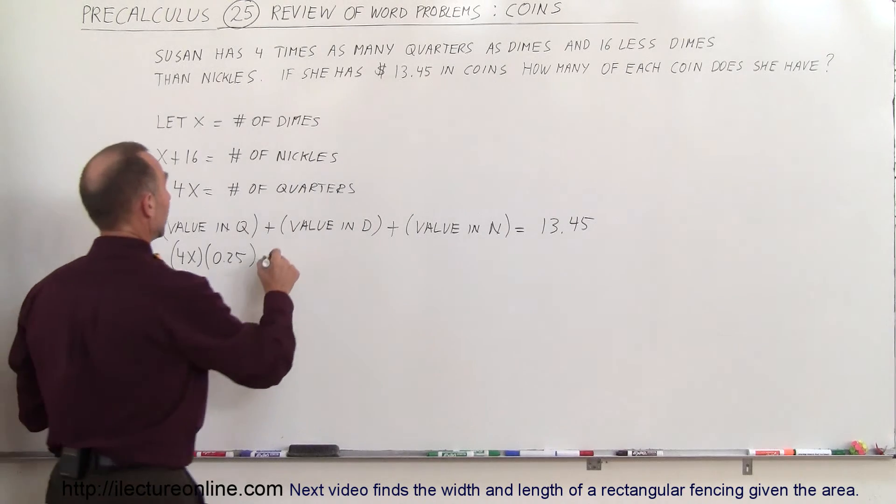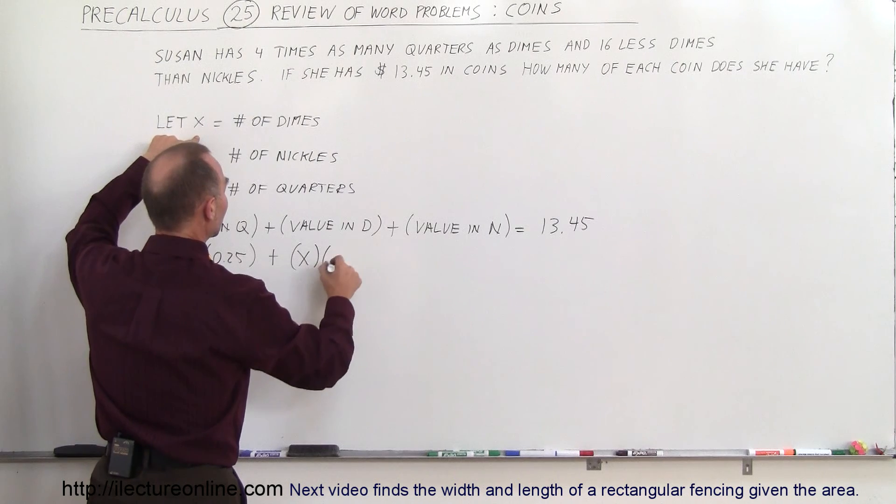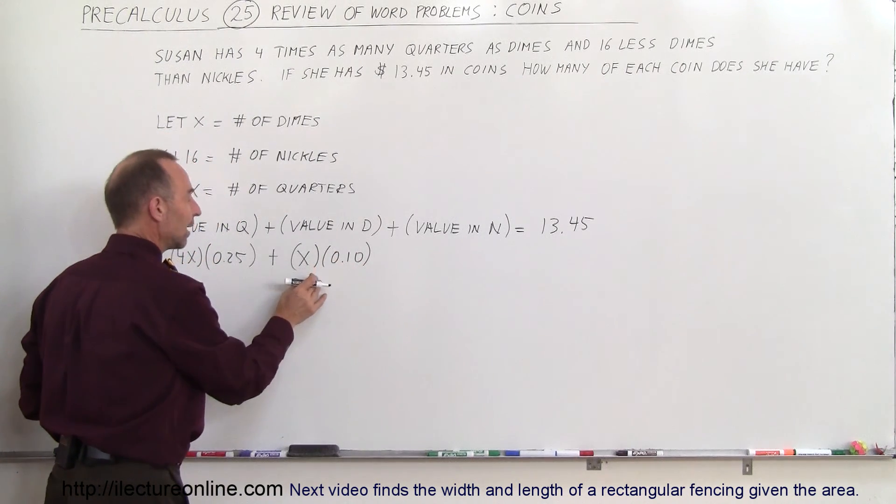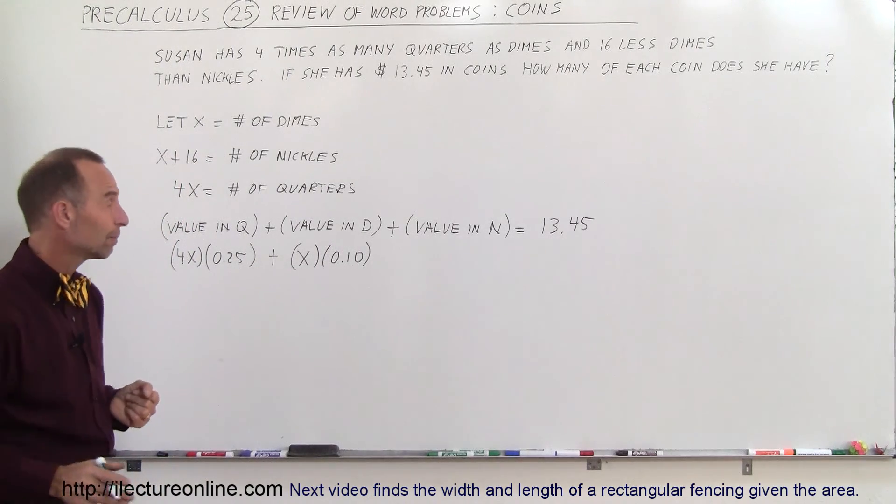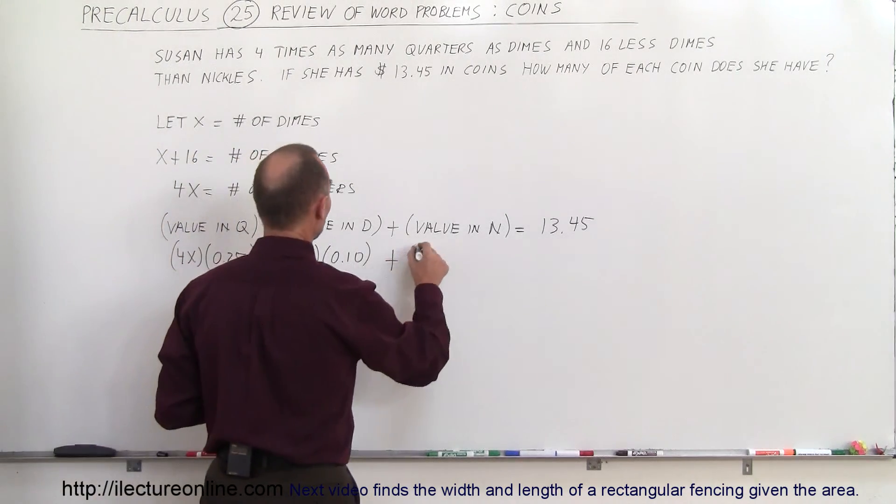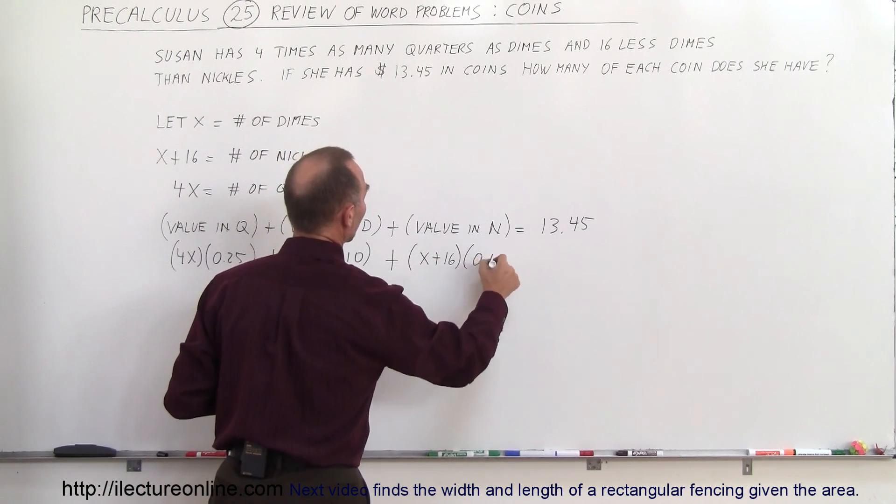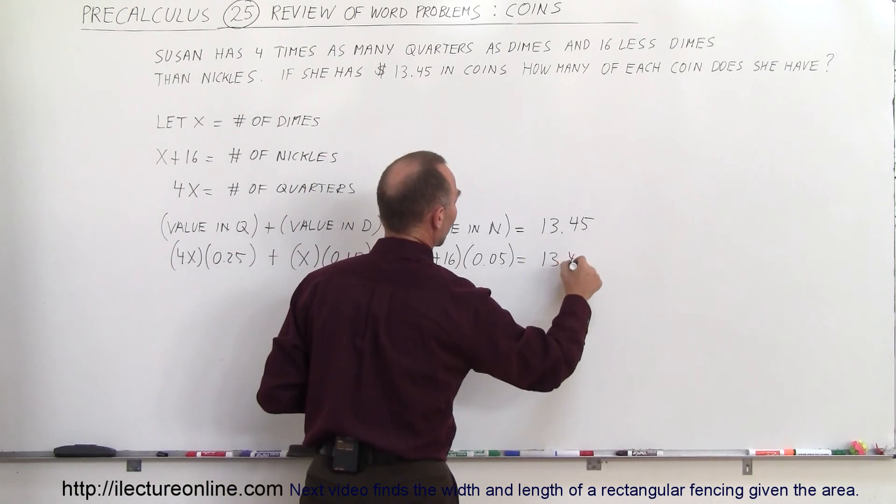Now, how many dimes do we have? We have X number of dimes, and the value for each dime is 0.10. So now we have the number of dimes times the value for each dime. And then we do the same for nickels. We have X plus 16 nickels, and they're each worth $0.05. And that adds up to a total of $13.45.